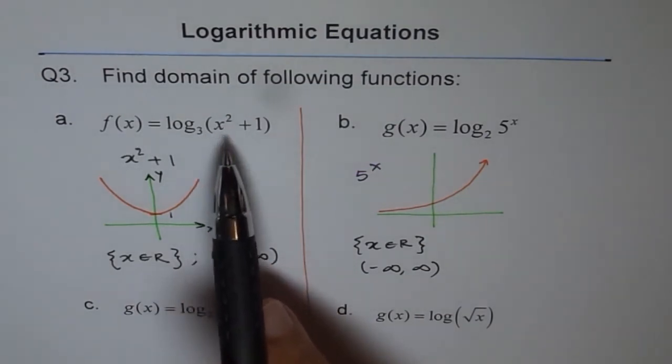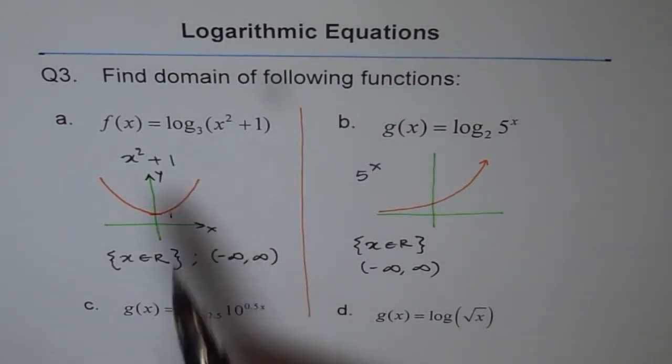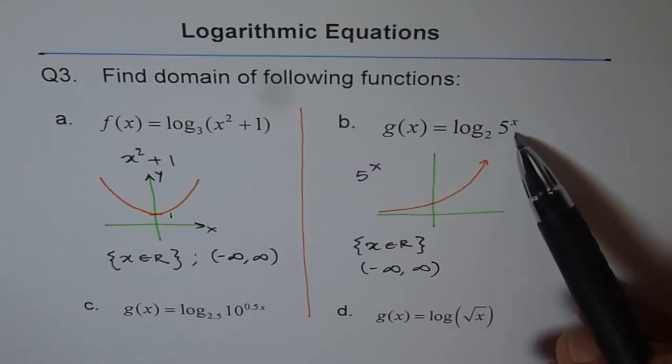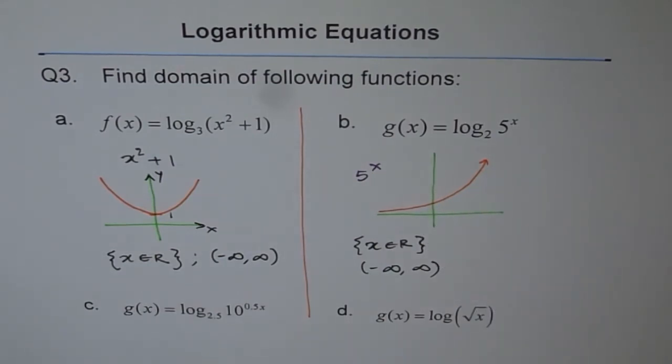x squared does the magic here. It makes all negative numbers as positive and the exponential functions, their output is always positive. That also does the magic and therefore we see that log of these functions will have no restriction.